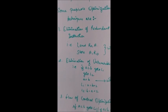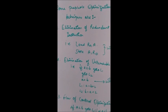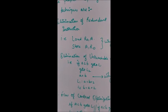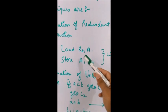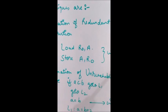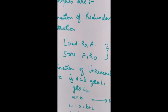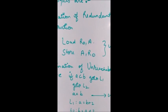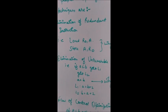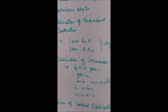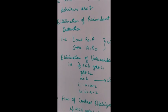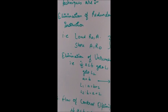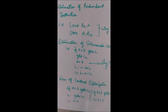The first technique is elimination of redundant instructions — instructions that are of no use. For example, consider these two instructions: 'load r0, a' loads a into r0, and then we are storing a into r0 again. These two instructions make no sense; we are just loading and storing a value without doing anything. So we can eliminate those two instructions.